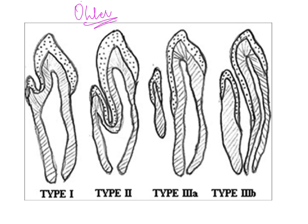A few things about dilated odontome, also known as dens invaginatus. Oehler was the one who gave this classification. Type 1 is where the invagination involves only the pulp chamber. Type 2 is when it involves two-thirds of the pulp space — that is, it involves the chamber as well as two-thirds of the tooth.